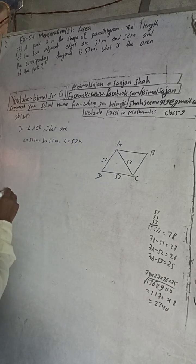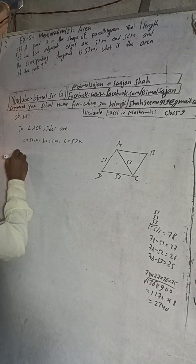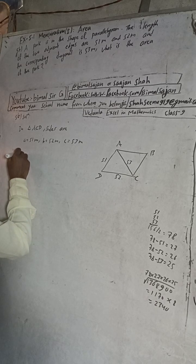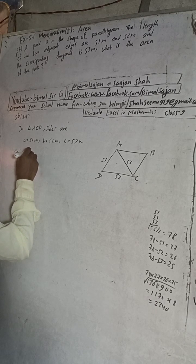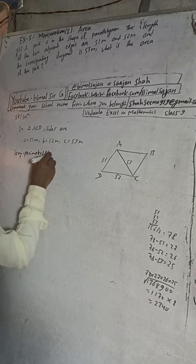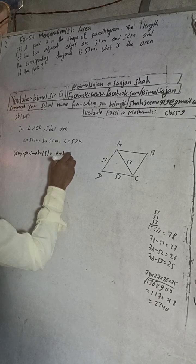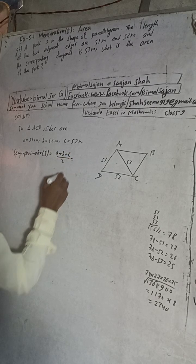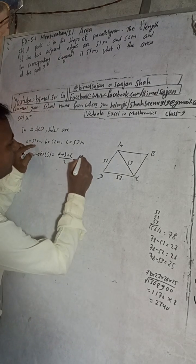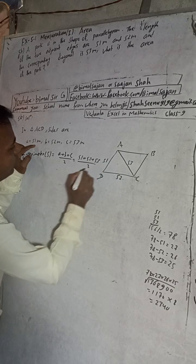Now the semi-perimeter, to find the area, we have to find semi-perimeter. Semi-perimeter S is equal to, formula is A plus B plus C by 2, that means sum of all sides of the triangle.